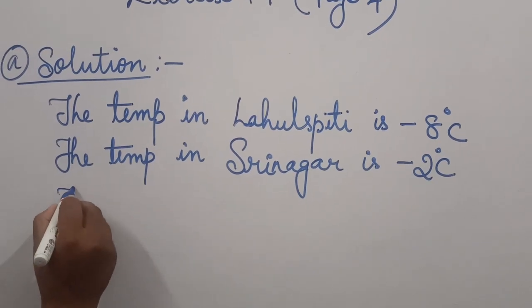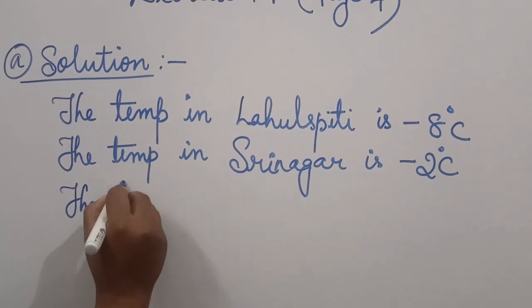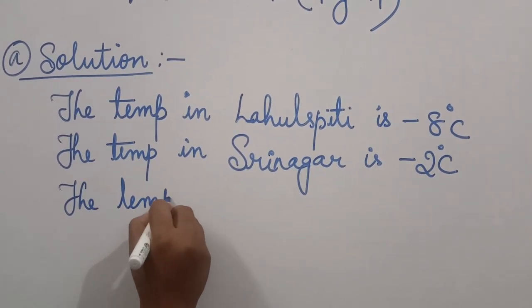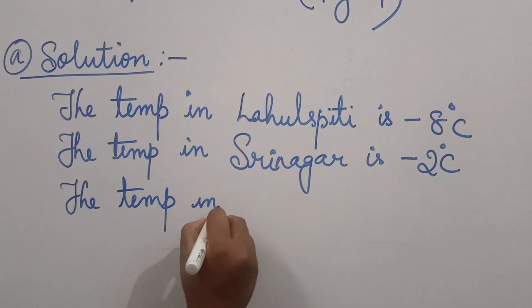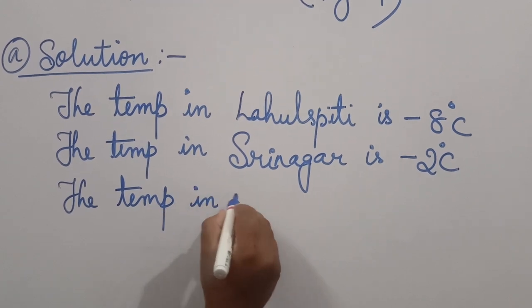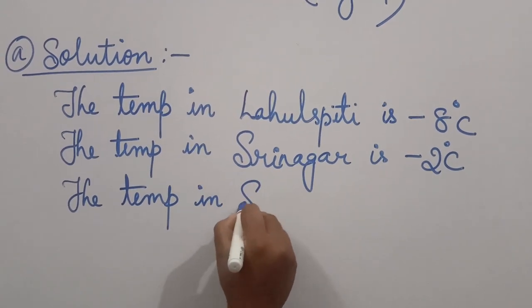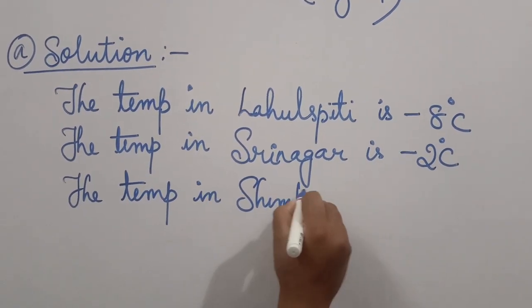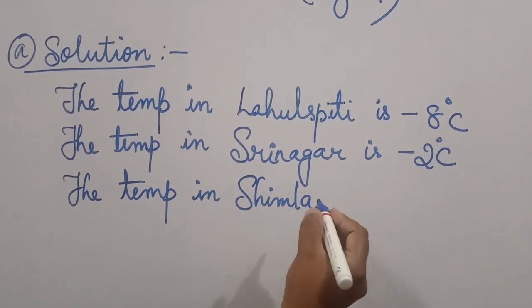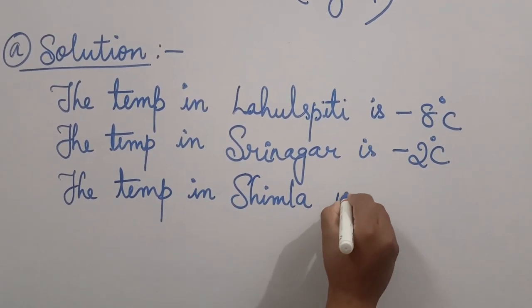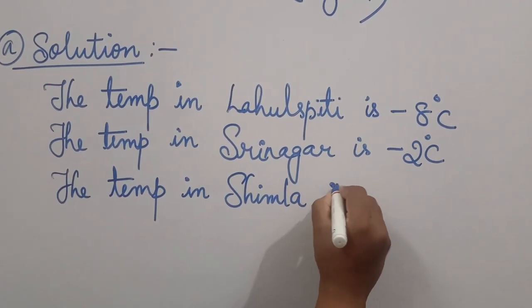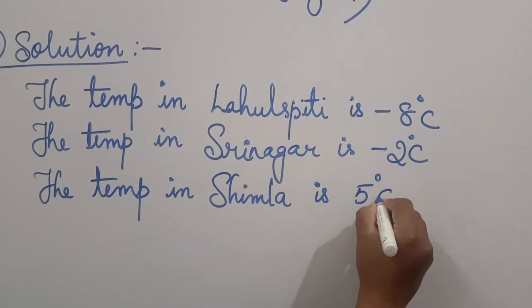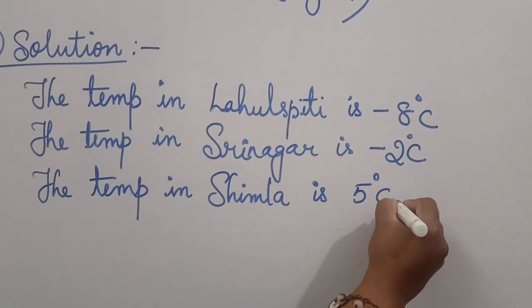Next, the temperature in Shimla. Where is Shimla? Shimla is in North India. The temperature is 5 degrees Celsius.